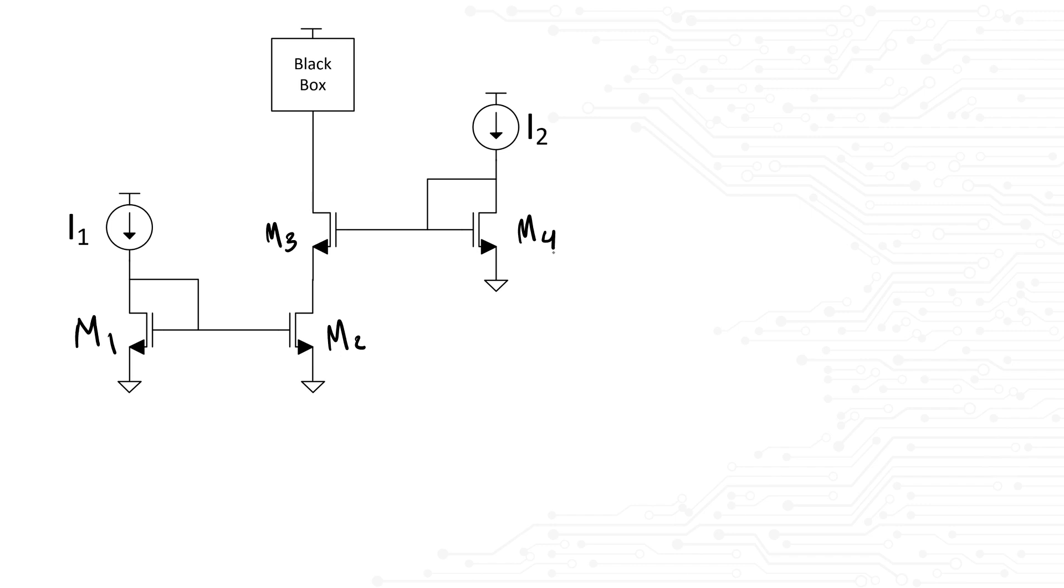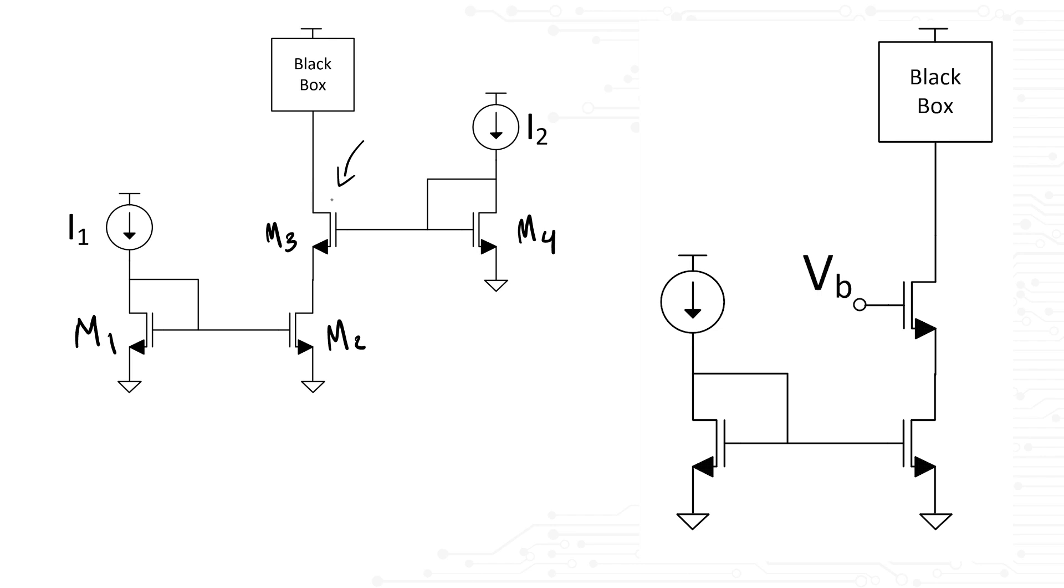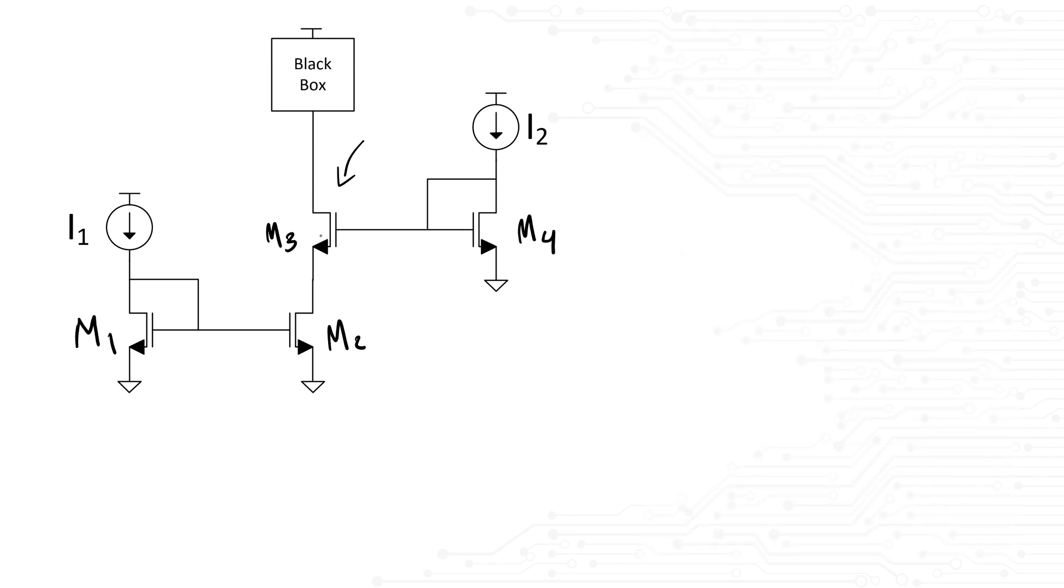You might be tempted to think that this is simply a current mirror with a cascoded device. After all, it's a familiar structure to everyone involved in analog IC design. However, nothing has been said about the currents, so we cannot conclude that. Just because it looks like a familiar structure doesn't mean that's exactly what the circuit is doing. So you can ask the interviewer about the current sources and their values, or you can start assuming them.